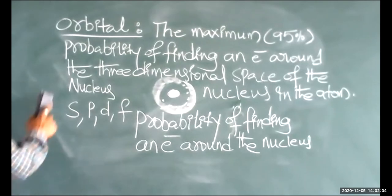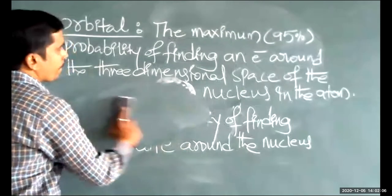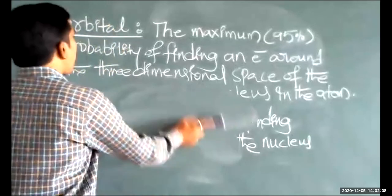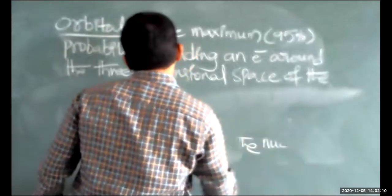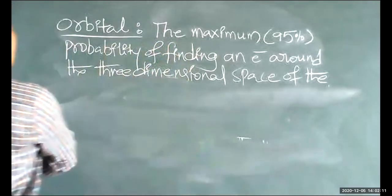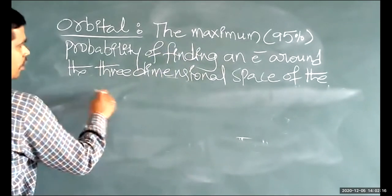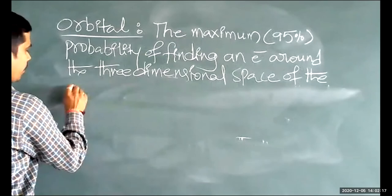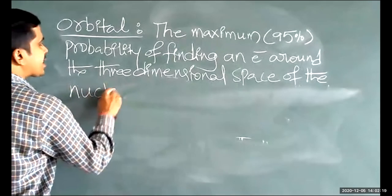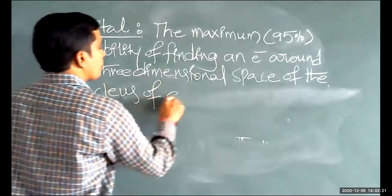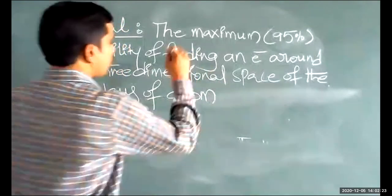The definition: the maximum probability of finding an electron around the three-dimensional space of the nucleus of an atom is called an orbital.